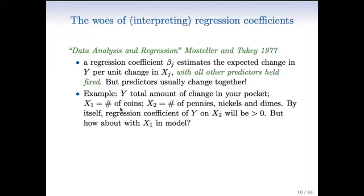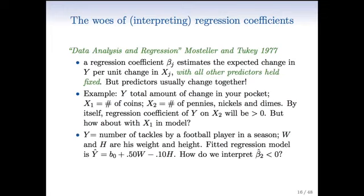But what about if I have x1 in the model? So for a given level of x1, think about whether the coefficient of x2 will be positive or negative. And we'll talk about the answer to this later on, but that's a simple example where you can see now how the effect, how the presence of one predictor affects the way that we think about, interpret the coefficient of another predictor. And of course, these two predictors are highly correlated by construction.